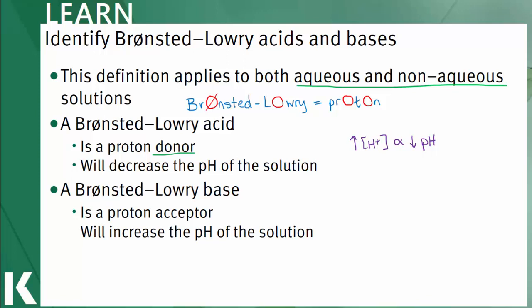My example of a Bronsted-Lowry acid is hydrofluoric acid, which will dissociate in solution to produce a hydrogen ion and fluoride ion. Since hydrofluoric acid is donating a proton in solution, it is a Bronsted-Lowry acid.